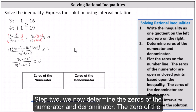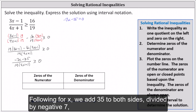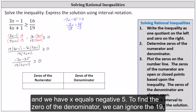Step two: we now determine the zeros of the numerator and denominator. The zero of the numerator is when -7x - 35 equals zero. Solving for x, we add 35 to both sides and divide by negative seven, giving us x equals negative five.